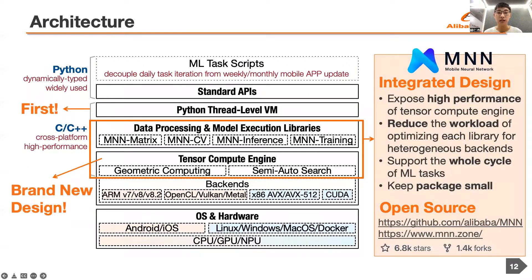Let's overview the architecture of the compute container. On the top, we choose the dynamically typed language Python as the script language. We implement a Python virtual machine by rebinding CPython to support task-level multi-threading and perform tailoring for the practical needs of a mobile app. Such Python VM-based design is the first in industry and equips the compute container with the capability of dynamic task delivery, decoupling daily machine learning task iteration from monthly or weekly mobile app updates. At the bottom, we implement a tensor compute engine along with standard data processing and model execution libraries called MN. MN covers data processing and model execution for mobile devices and cloud servers in a unified way, exposing the high performance of the optimized tensor compute engine to different libraries.